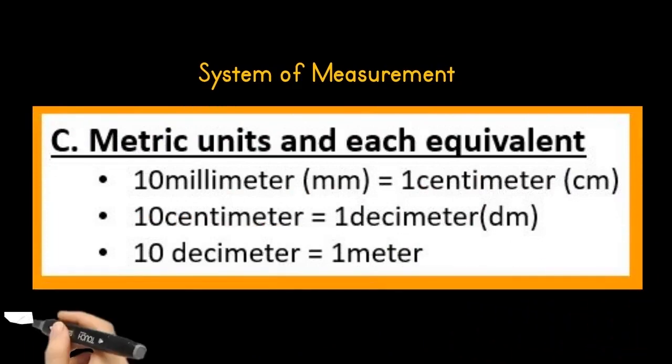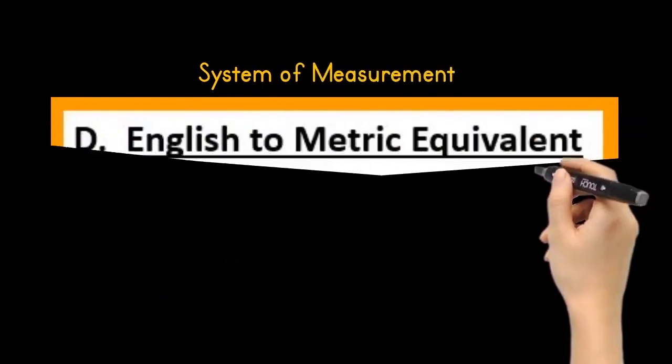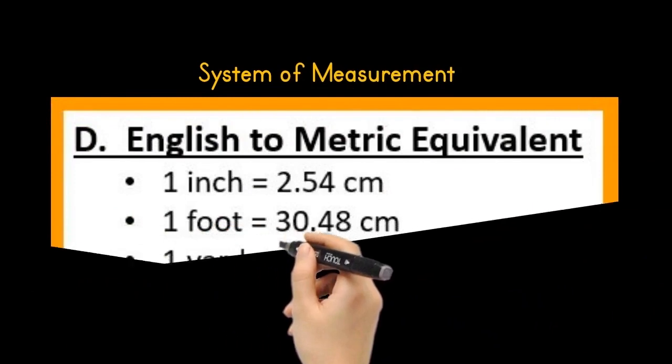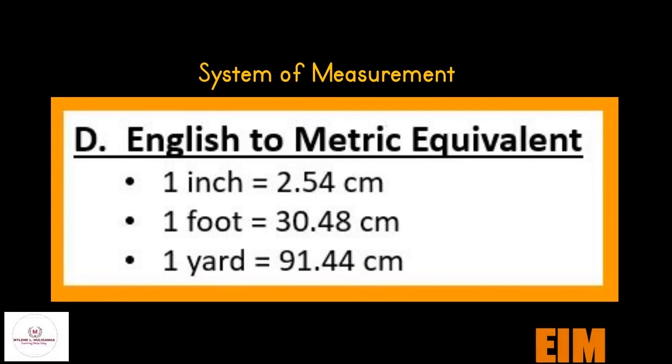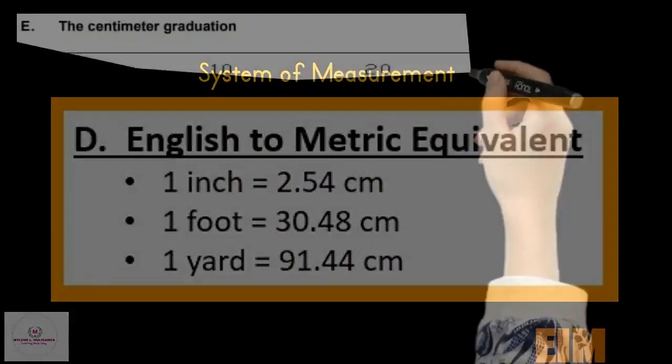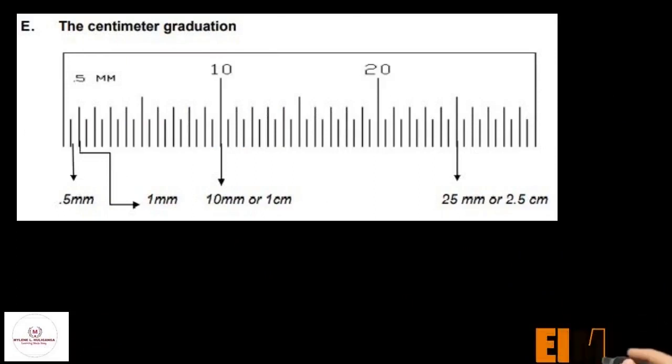The metric units in each equivalent: 10 millimeters is equal to one centimeter, 10 centimeters is equal to one decimeter, 10 decimeters is equal to one meter. The English to metric equivalent: one inch is equal to 2.54 centimeters, one foot is equal to 30.48 centimeters, one yard is equal to 91.44 centimeters.